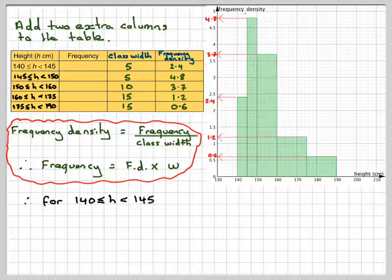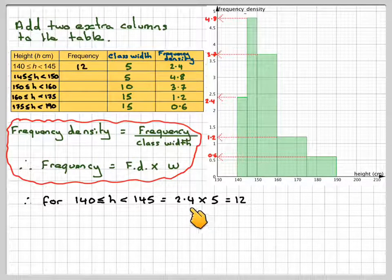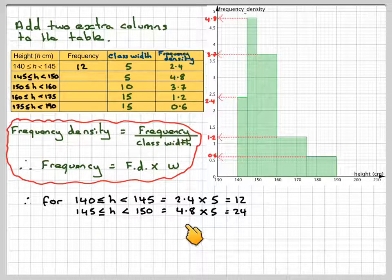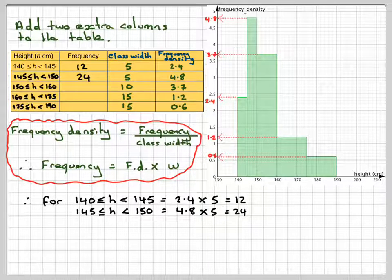So for 140 to 145, that's 2.4 times 5, which is 12. We'll put it into the table. And then from 145 to 150, that's 4.8 times 5, which is 24. We'll put it into the table.